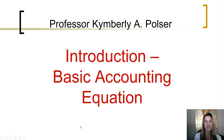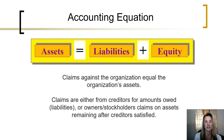In this segment, we are going to look at the basic accounting equation. The entire accounting system is based on this underlying equation. This equation states that a company's total assets will always equal the total liabilities plus the owner's equity.